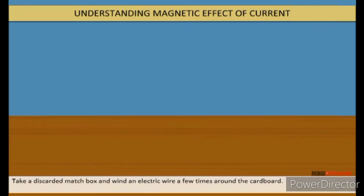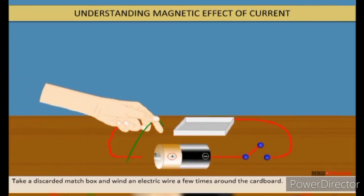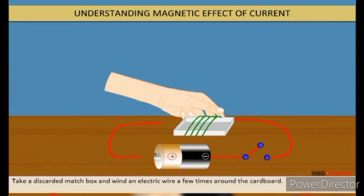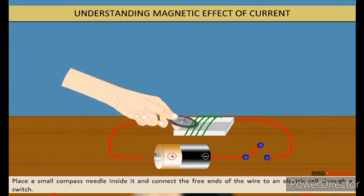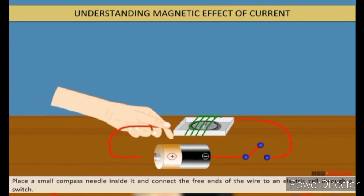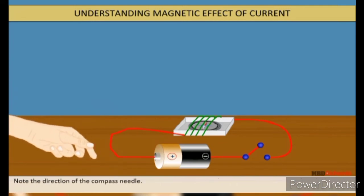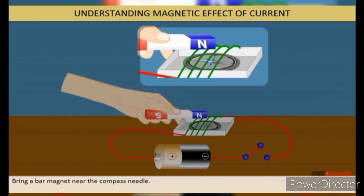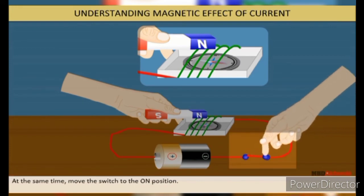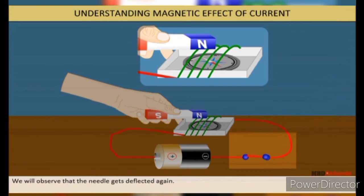Take a discarded matchbox and wind an electric wire a few times around the cardboard. Place a small compass needle inside it and connect the free ends of the wire to an electric cell through a switch. Note the direction of the compass needle. Bring a bar magnet near the compass needle. We will observe that the needle gets deflected. At the same time, move the switch to the on position. We will again observe that the needle gets deflected again.